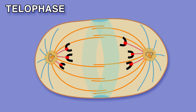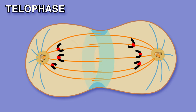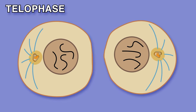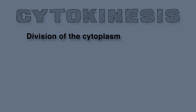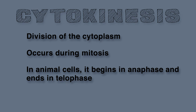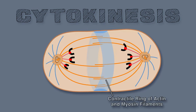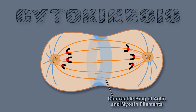Telophase is the last stage of mitosis. At this point, the two sets of daughter chromosomes arrive at the spindle poles and decondense. The formation of the two nuclei — which occurs when a nuclear envelope assembles around the two genomes — means that mitosis is over. Cytokinesis, the division of the cytoplasm, occurs during mitosis. In animal cells, it begins in anaphase and ends in telophase. It occurs thanks to the formation of a contractile ring of actin and myosin filaments, which form a rapidly deepening furrow.